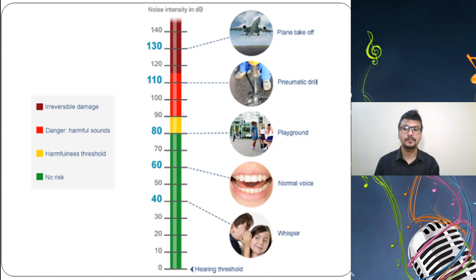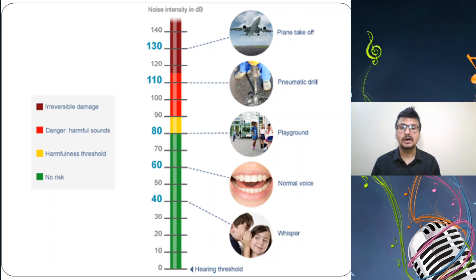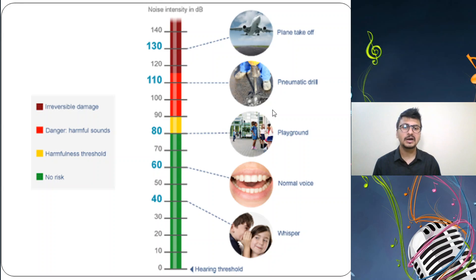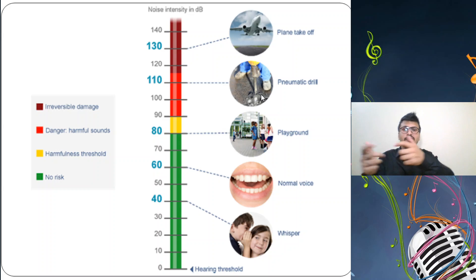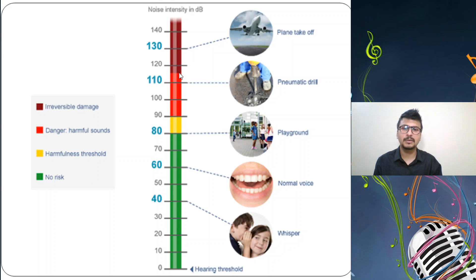At 80 decibels it becomes the harmful threshold — problem starts. For example, people talking loudly in a playground or auditorium. Above 90 it's the red zone — from 90 to 115 decibels, harmful sounds are present. At 110 decibels you find a pneumatic drill — the sound when someone is drilling into a wall. Above 120 is the maroon zone indicating irreversible damage that cannot be treated by any ENT specialist or neurotologist.